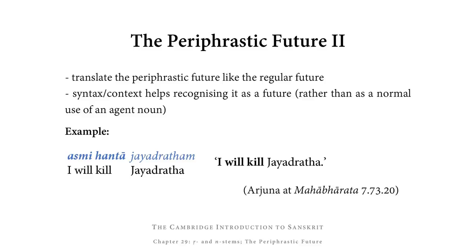When you encounter a periphrastic future, translate it into English just like a regular future — 'I will see', 'I will lead', and so on. It is the syntax, i.e. the context of the sentence, that helps you recognize it as a periphrastic future rather than a normal agent noun. One example from the Mahābhārata: asmi hantā jayad-ratham. Asmi hantā could mean 'I am a killer', but together with jayad-ratham in the accusative it can only mean 'I will kill Jayad-ratha' — recognizing asmi hantā as a periphrastic future lets us make use of that accusative as the direct object.